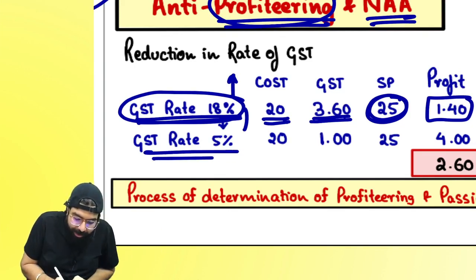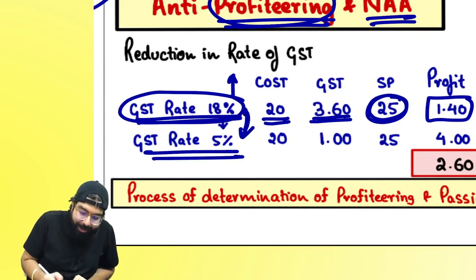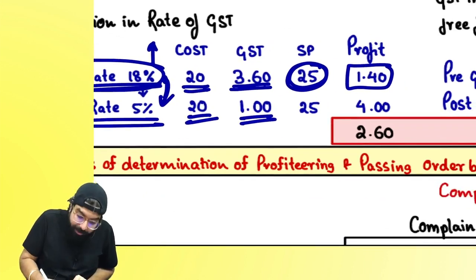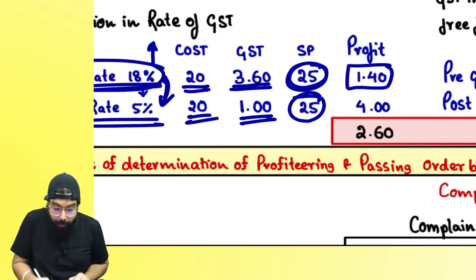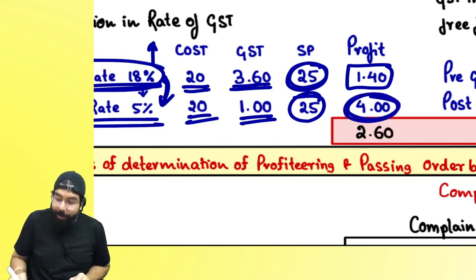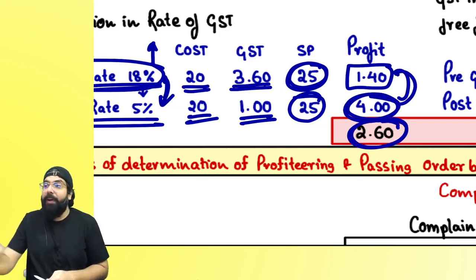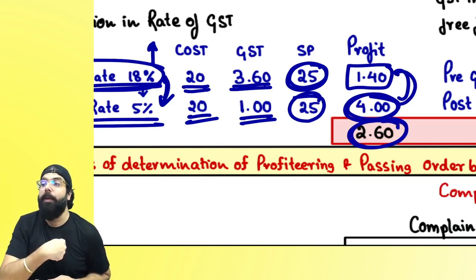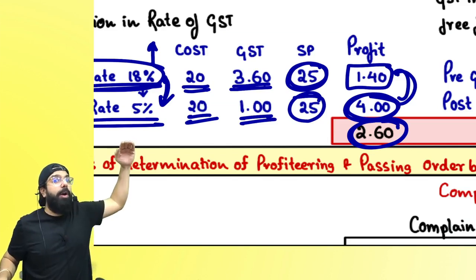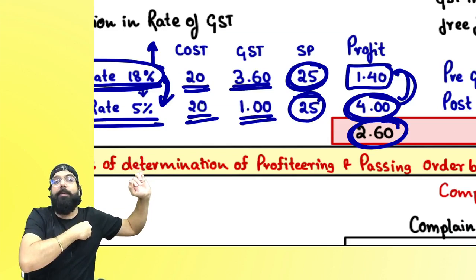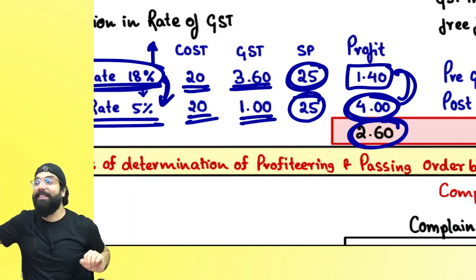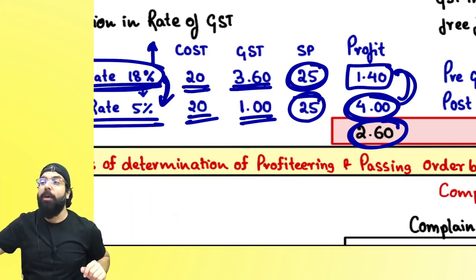GST rate reduced by the government — the benefit also should be going to you. If the rate is reduced from 18% to 5%, GST is 1 rupee, but uncle is still selling at 25 rupees — now making 2.60 rupees profit which should have come to your pocket. If GST went up you would pay more; GST has come down, you should benefit. If you don't pass it on, you are doing profiteering — making extra profit because of the GST rate coming down.